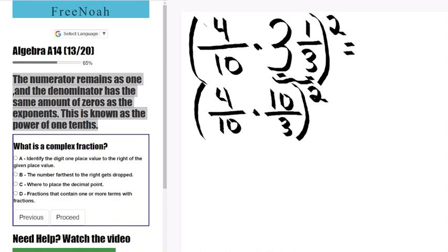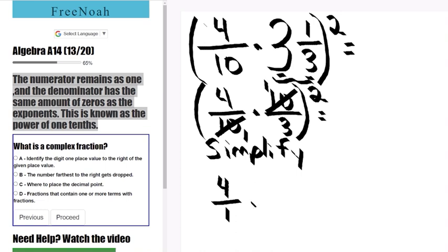We're going to put the two fractions in parentheses and square. Now let's simplify. We notice that ten goes into ten one time, so we'll scratch off the tens and rewrite a one. Now we multiply. We're left with four over one times one over three in parentheses to the second power.